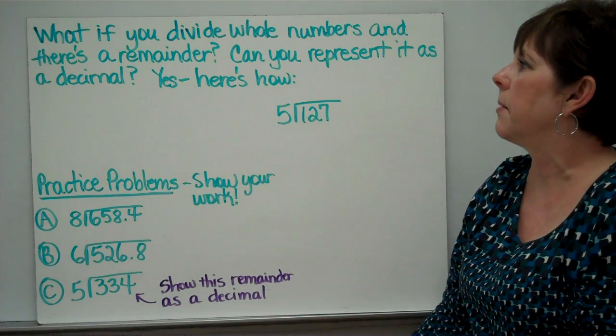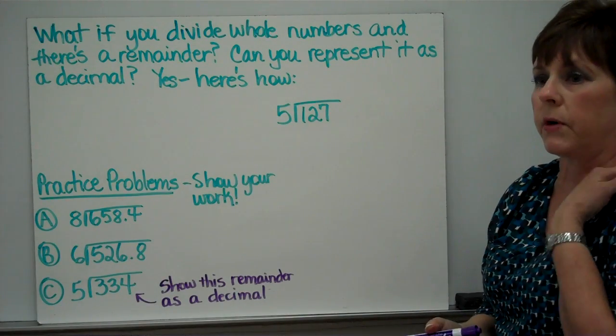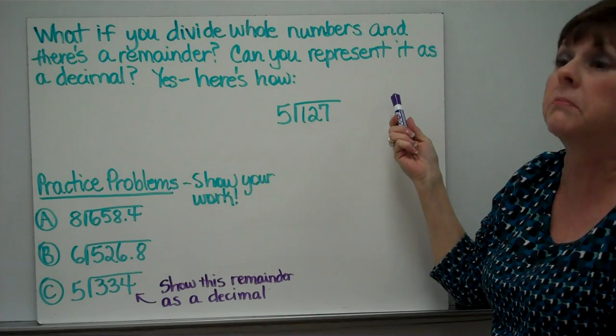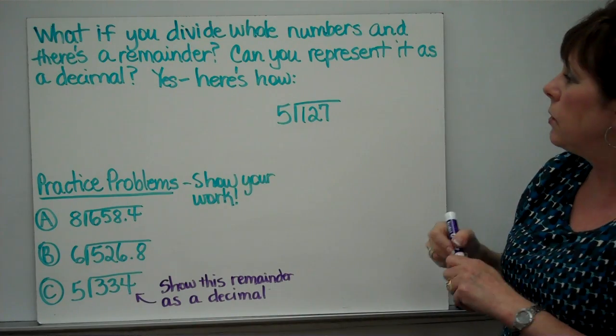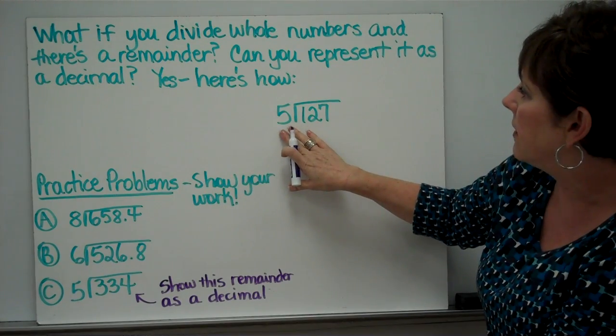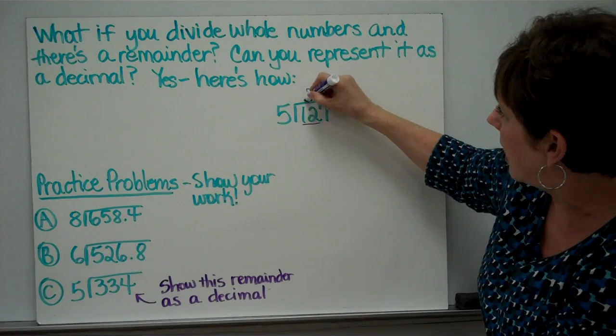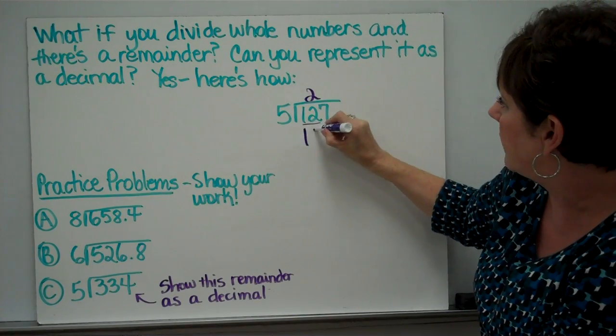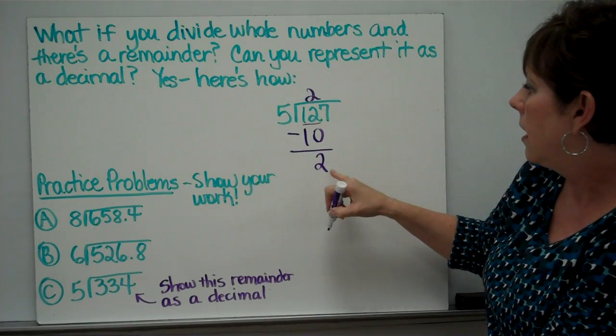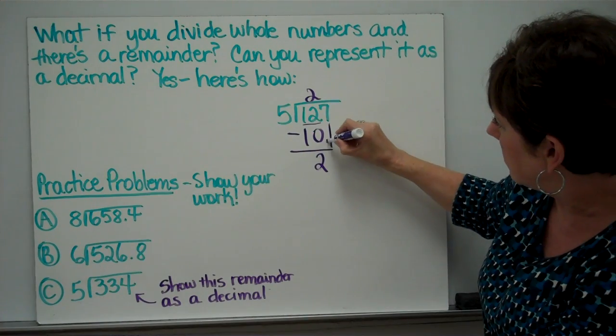What if you divide whole numbers and there's a remainder? And you probably heard somebody say, you can make that into a decimal. Can you represent it as a decimal? Yes, you really can. And here's how. You'll divide like normal first. 1 cannot be divided by 5, but 12 could be divided by 5. 2 times. 2 times 5 is 10. Subtract 2. Can 2 be divided by 5? No. So, I'm going to bring down my next number.